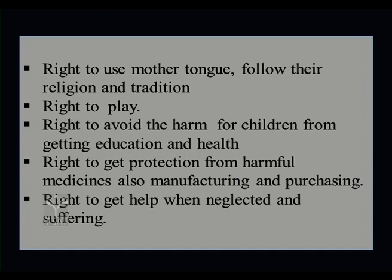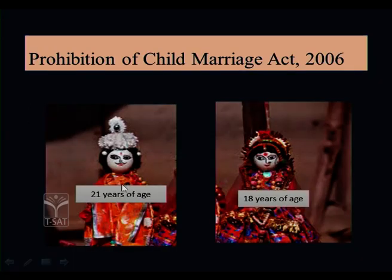These are the various child rights mentioned in the United Nations Organization Charter, which is also signed and implemented by the Indian government. Now we shall discuss the Prohibition of Child Marriage Act 2006. What is child marriage? If a boy is below 21 years of age or a girl is below 18 years of age and they enter into a contract of marriage, it is called child marriage.